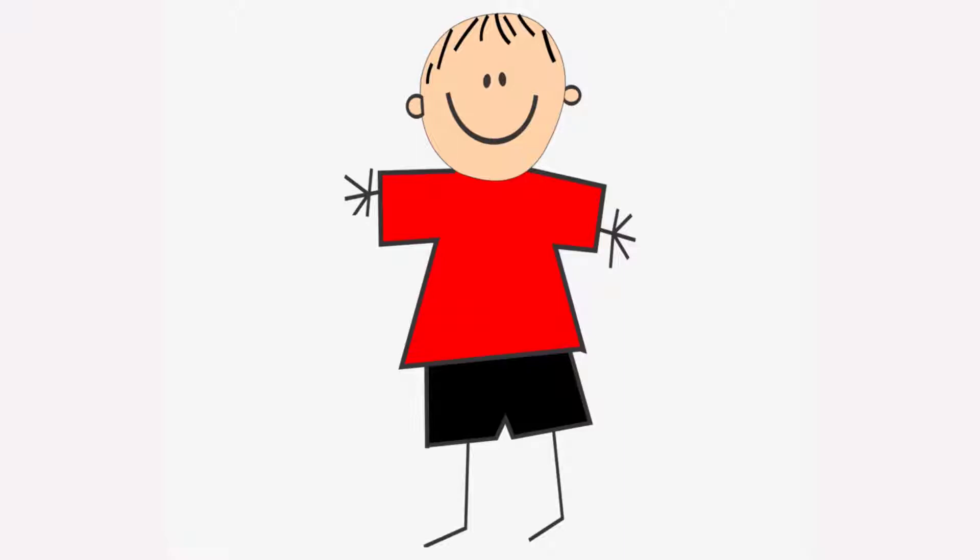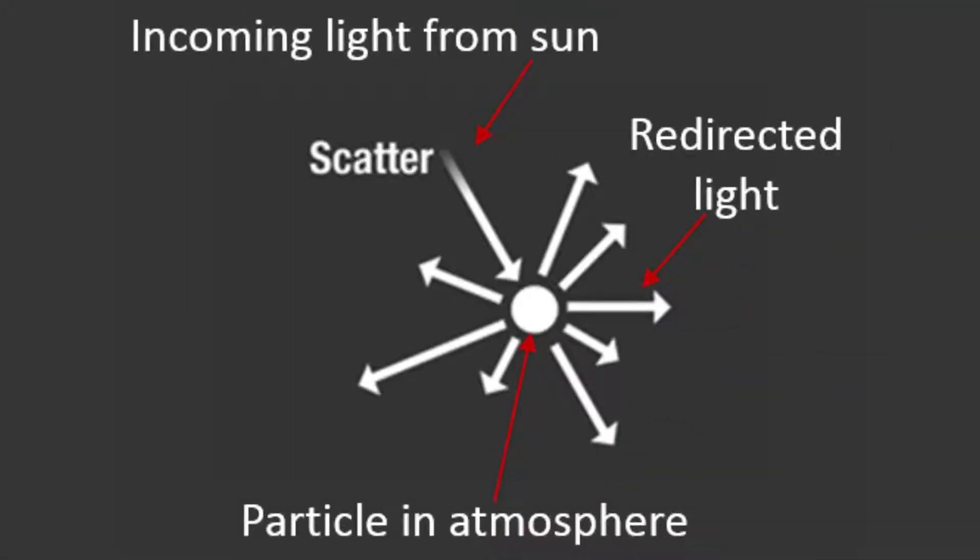When white light falls on your red t-shirt, your t-shirt absorbs all colors except for red. Your t-shirt reflects red color and you see your t-shirt in red. A similar thing happens in the sky.